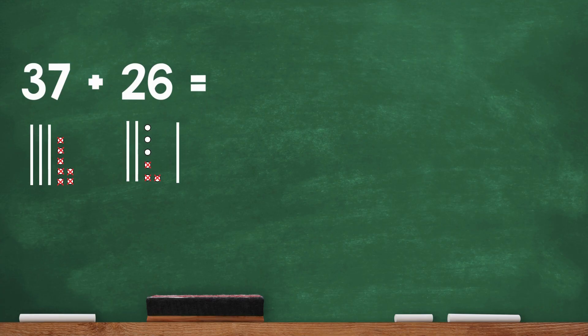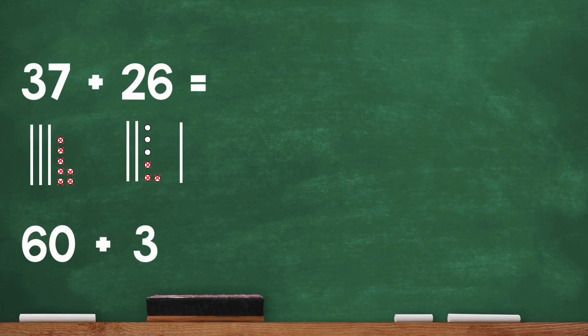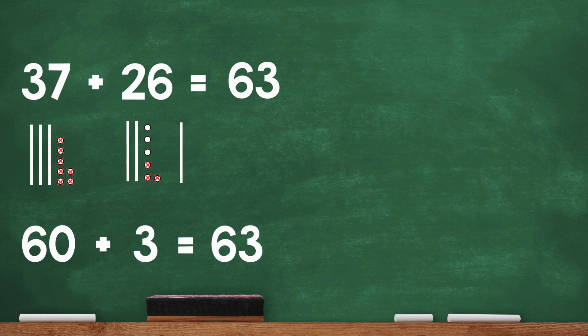Let's add it all together now. After exchanging the 10 ones for a 10, now I have 6 tens. That's 60. Plus, I have 3 ones. 60 plus 3 equals 63. So 37 plus 26 equals 63.